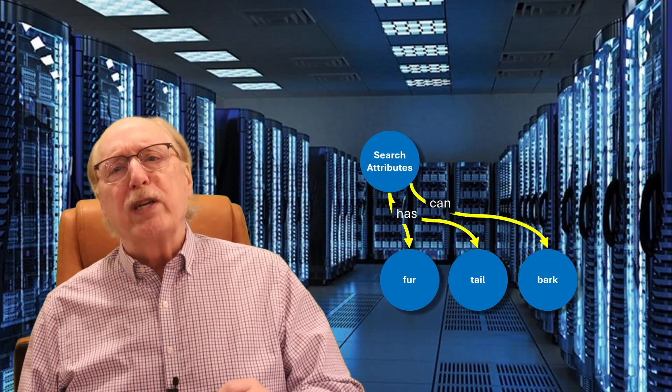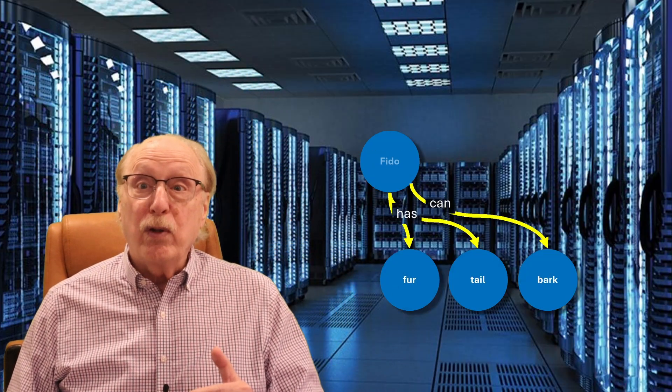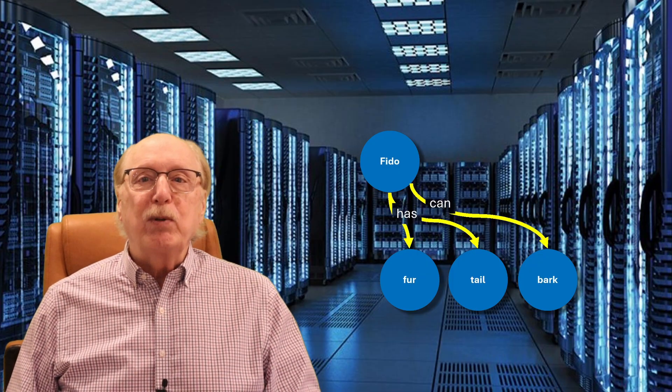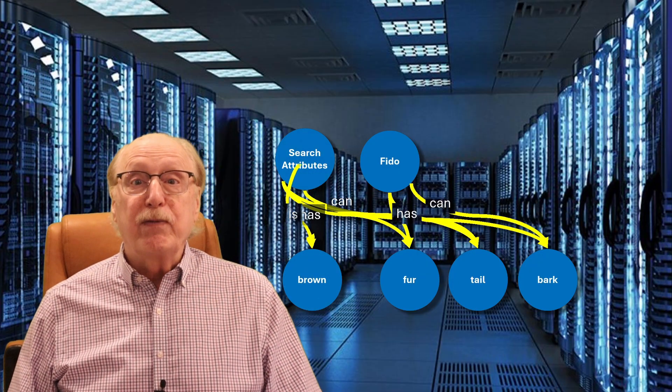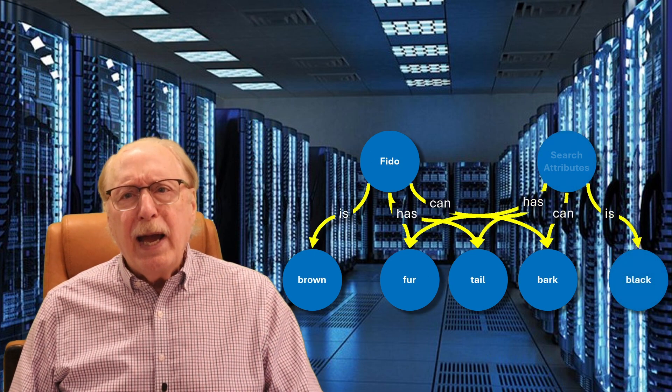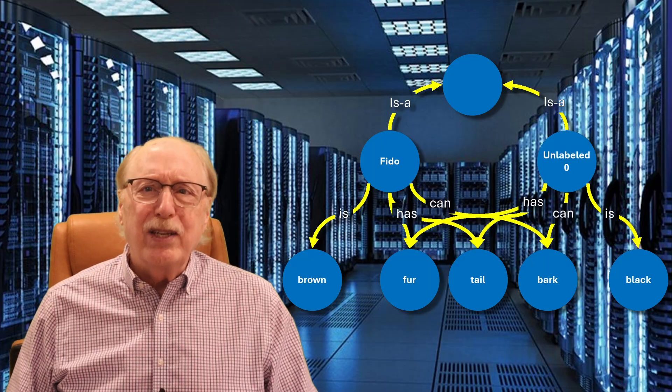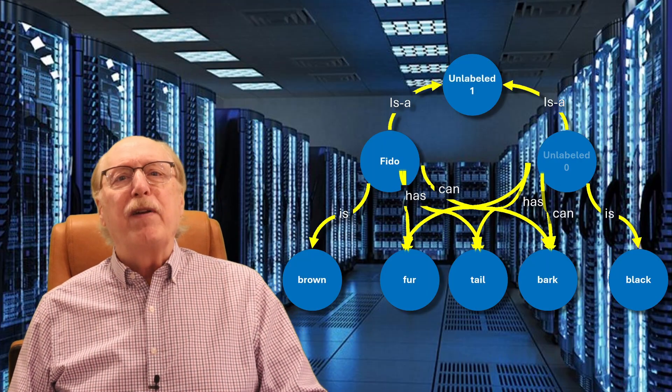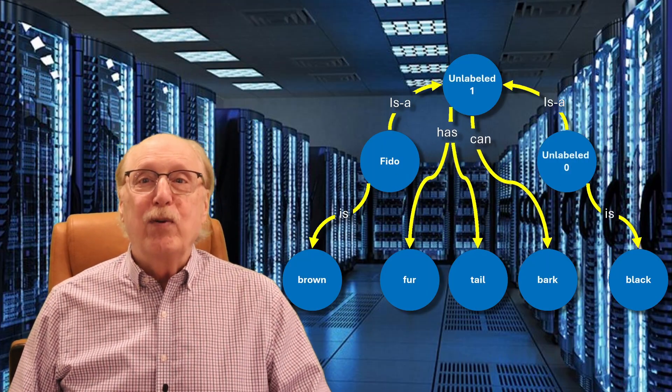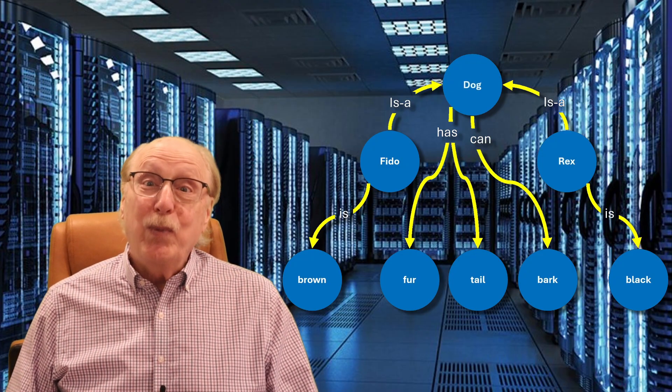In previous videos, we explored how the neurons of the brain, organized as cortical columns, can naturally represent the nodes and relationships of a graph. But how can your brain actually learn? In a moment, I'll demonstrate the only mechanism that can work with my favorite example: Fido is a dog. It's a lot more interesting than you might expect.